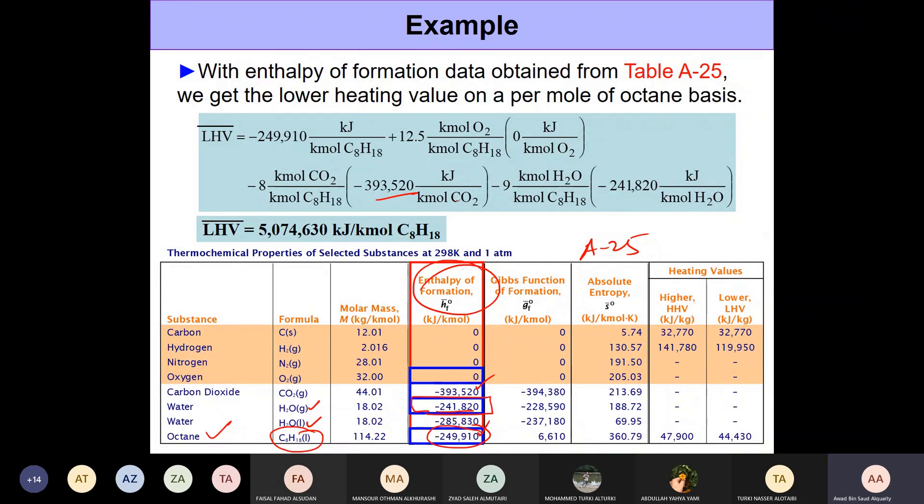Then it's just a matter of plugging in these numbers and calculating. You get 5,074,630 kilojoule per kilomole of octane - that's the lower heating value for octane. Now we don't want it in kilojoule per kilomole, we want it in kilojoule per kilogram of the fuel.